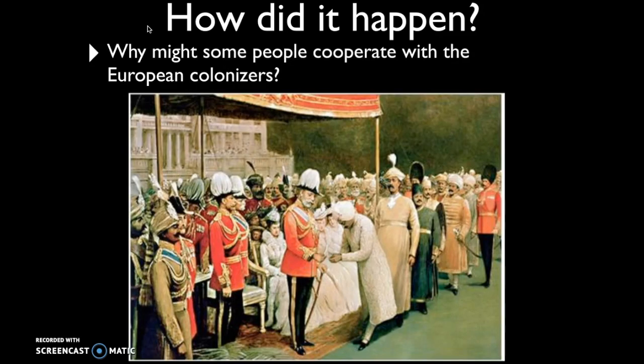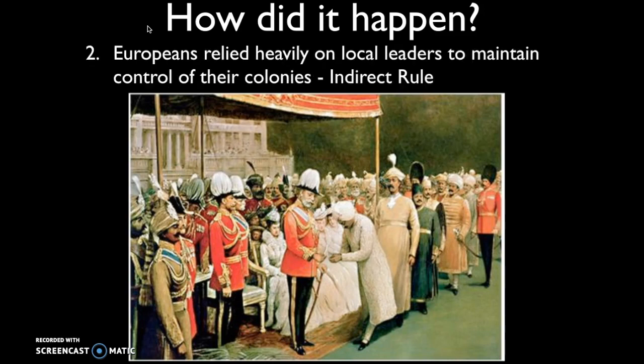If Europeans weren't settling in these colonial territories in very large numbers, how were they able to maintain control? One way was by gaining the cooperation of some people within these regions — in most cases, people who already had some sort of power or privilege. Europeans relied heavily on local leaders to maintain control over their colonies in a process known as indirect rule. Europeans insisted they had ultimate power and authority, but oftentimes left local rulers, princes, and tribal leaders in place to maintain an established social hierarchy.